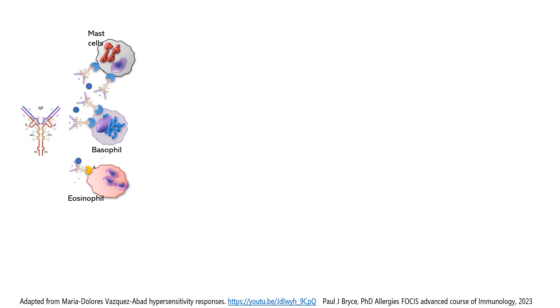This activation of the receptors in the cells is going to produce a degranulation. So what is in these granules? What is it that these three types of cells have?